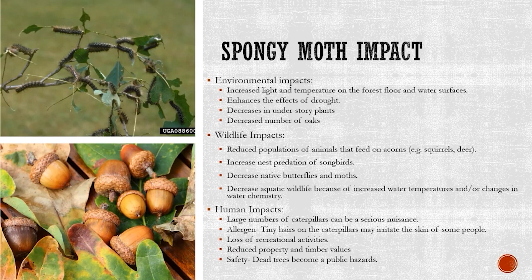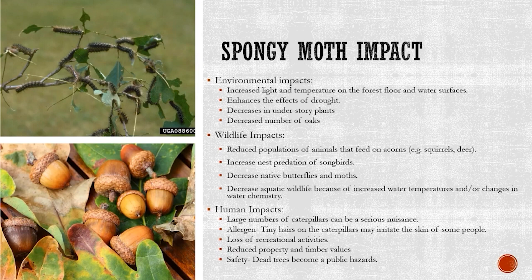Beyond these impacts to the ecosystem, there are impacts to humans themselves. A large number of caterpillars feeding in an area can be a really serious nuisance because as they feed, they generate waste and that waste will rain down from the trees where they're feeding. The caterpillars also can be an allergen to some people who are sensitive to them, and the tiny hairs on them can irritate people's skin. There can be general loss of enjoyment of recreational activities when there are heavy populations of spongy moth feeding. You also will see reduced timber value because dead trees aren't as useful in timber, and dead trees can cause reduced property values. Most importantly, dead trees can be a really serious safety hazard and can cause insurance issues as well.